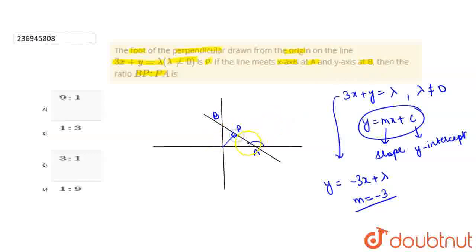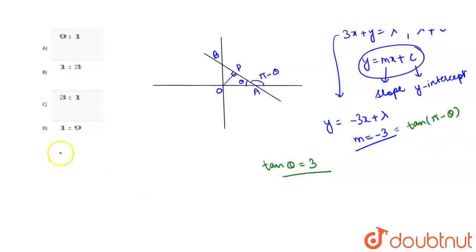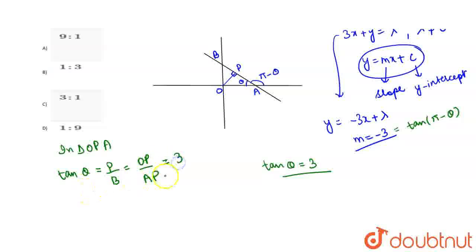यह एक perpendicular है तो 90 degree होगा angle। अगर हम इस angle को theta मान लें, तो दूसरा angle pi − theta होगा। अभी हमने बोला कि हमारी slope है minus 3। slope = tan(pi − theta) = −3, तो tan theta = 3। In triangle OPA, tan theta = OP/AP, तो OP/AP = 3।